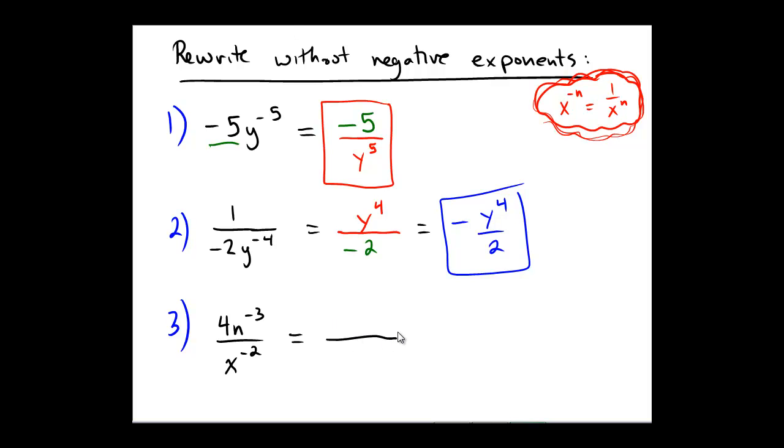would have a fraction line. And the 4 is untouched because it doesn't have a negative exponent. So it stays right there as a 4. The n that's raised to the negative 3 gets shifted to the denominator because it was on top as a negative exponent. So now it's on the bottom as a positive exponent. And the x to the power of negative 2 gets shifted up to the numerator.